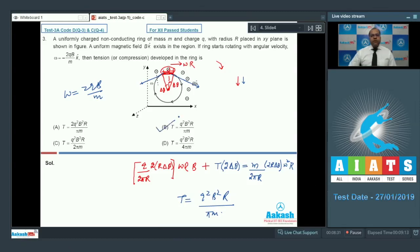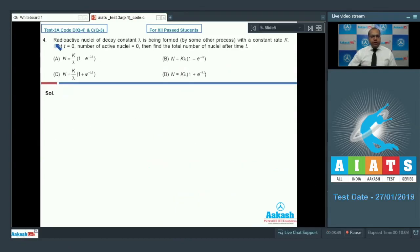Let's move to question number 4. Radioactive nuclei of decay constant λ is being formed by some other process with a constant rate K. If at T equal to 0, number of active nuclei is equal to 0, then find the total number of nuclei after time T.